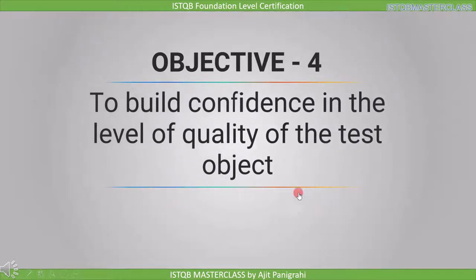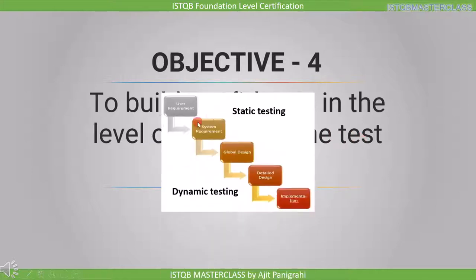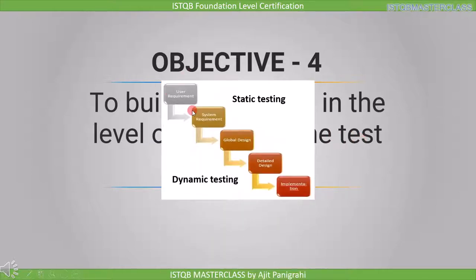The fourth objective is to build confidence in the level of quality of the test object. In the requirement stage, requirement is our test object. If we clarify all our requirements in the requirement stage itself, then we can build confidence in our requirement and finally in our product.